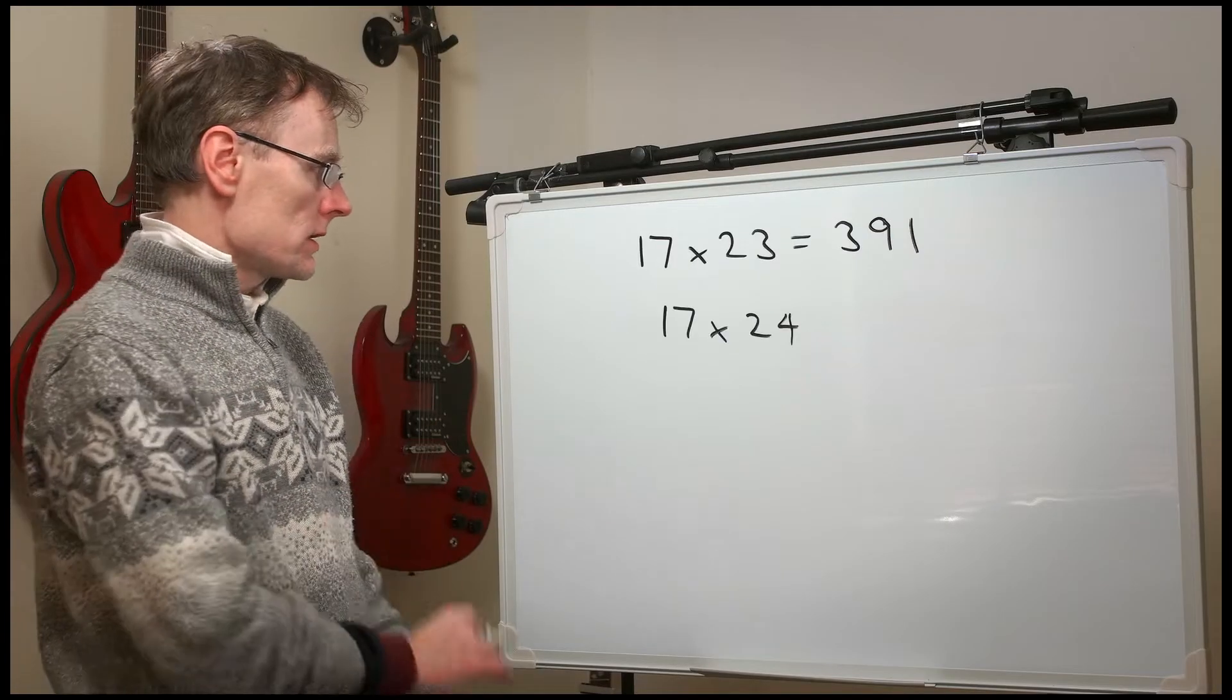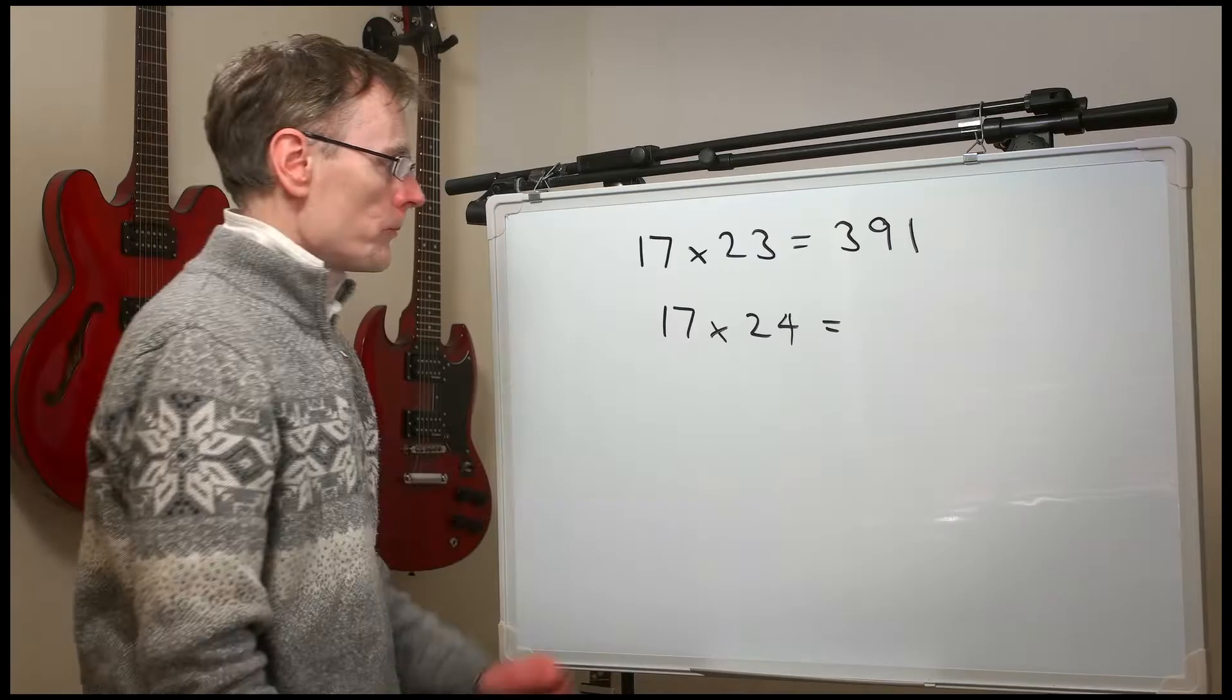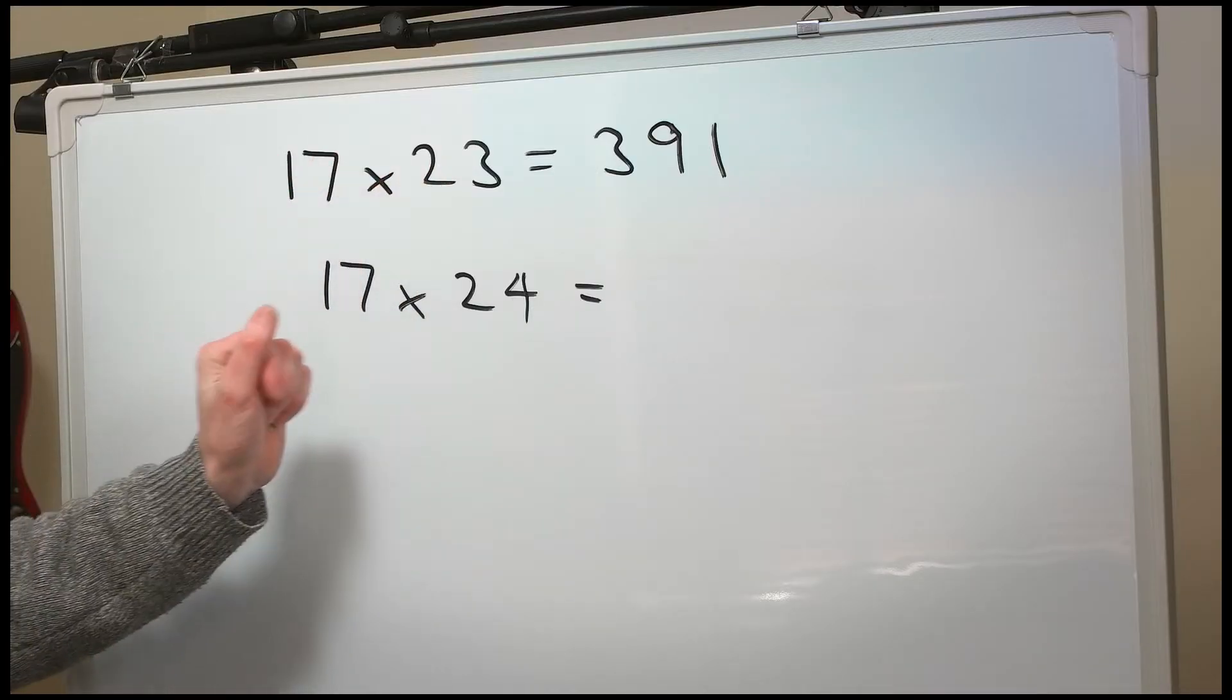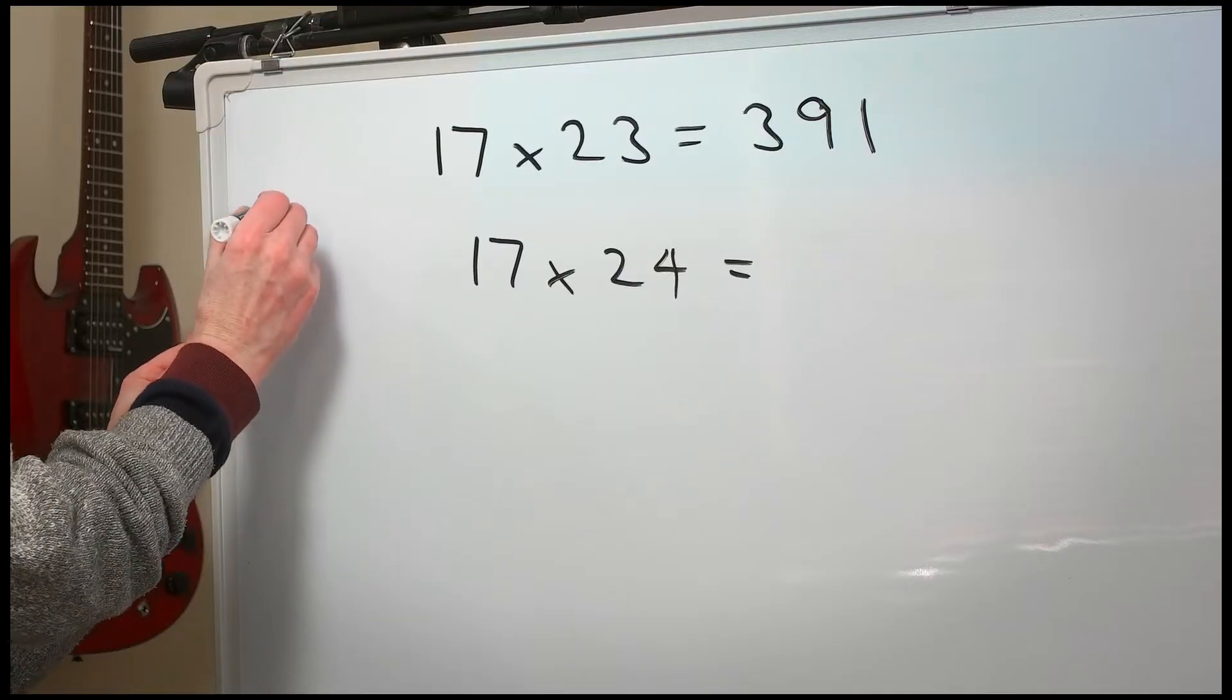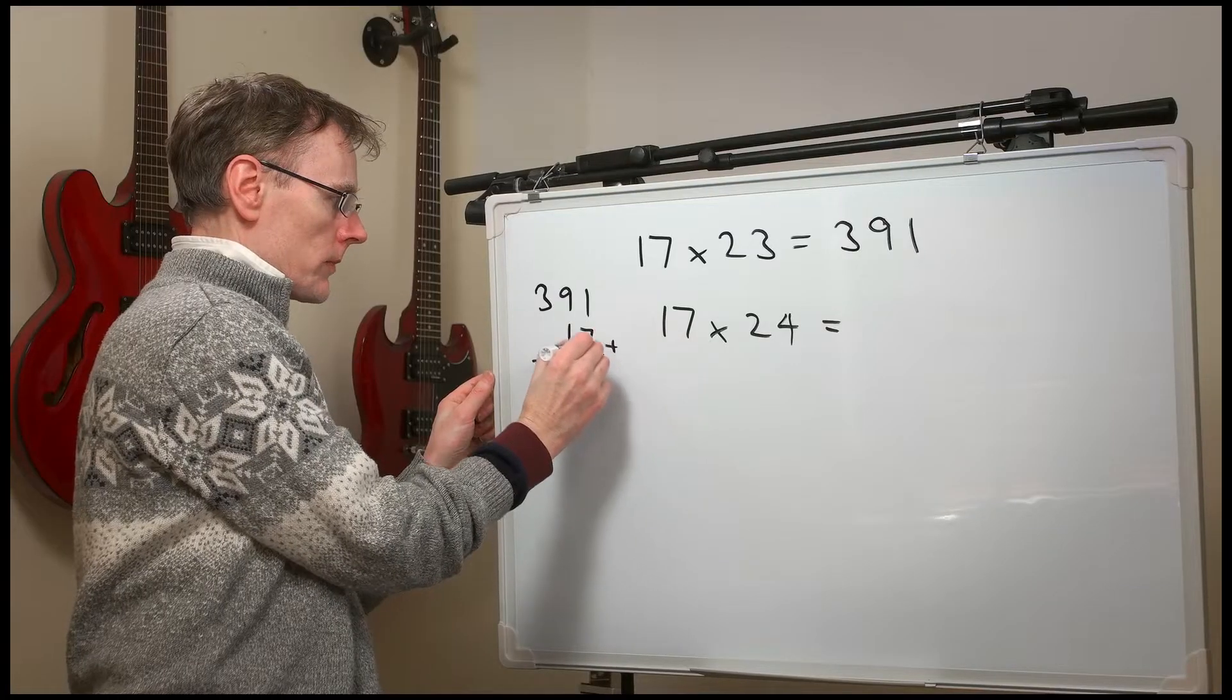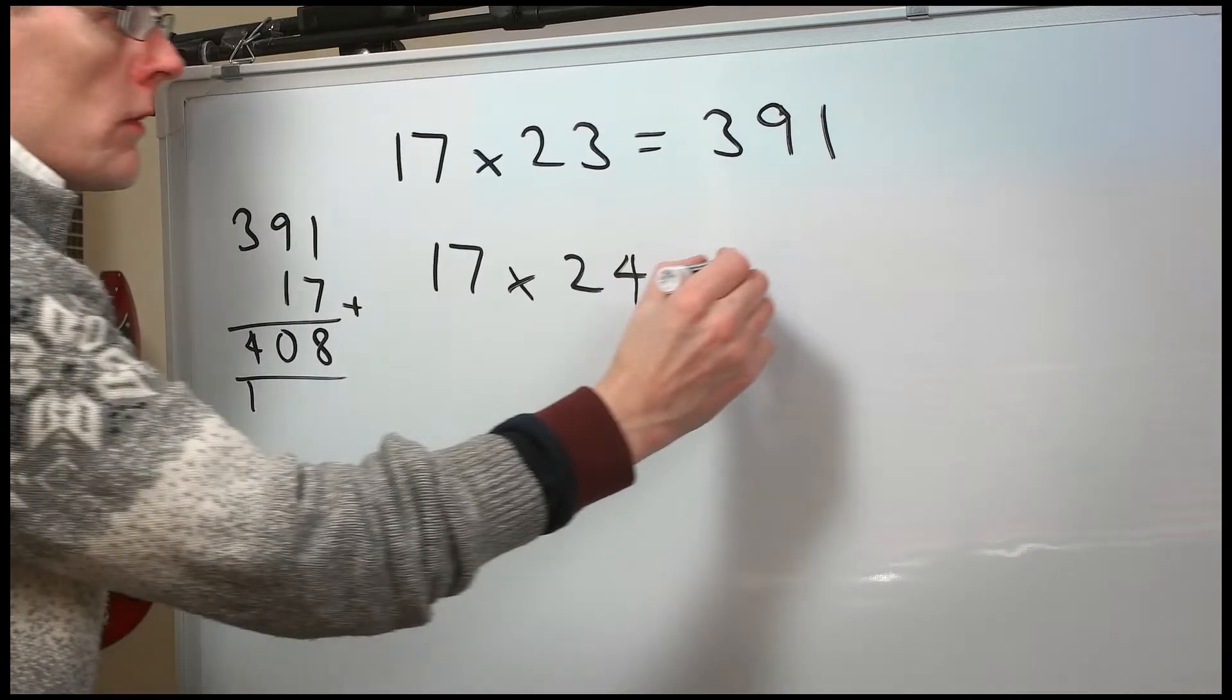What about 17 times 24? Well, 17 times 23 is 391. We need to add on another 17. Here we have 23 lots of 17, so 24 lots of 17. Let's take 391 and add on another 17. 7 plus 1 is 8, 9, 10, 408.